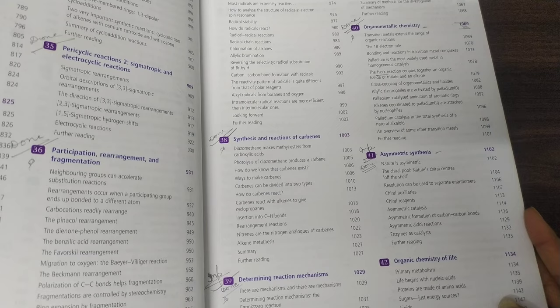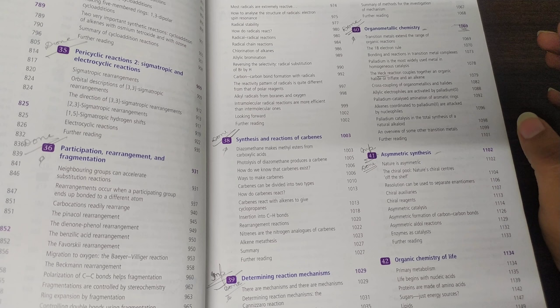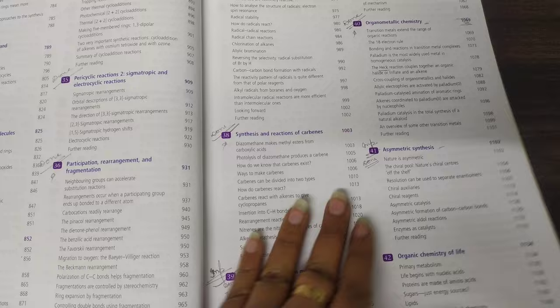After that, these two chapters are the most important - organometallic chemistry and asymmetric synthesis. In organometallic chemistry, I was directly asked questions from examples, but I didn't remember, so I got confused. So let's take a look at organometallic.